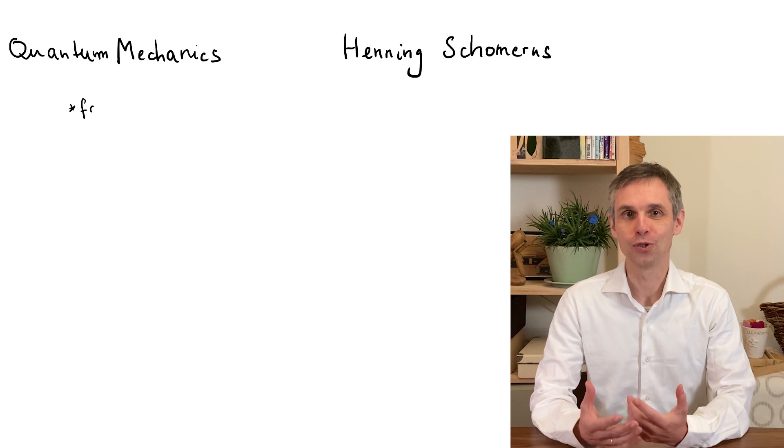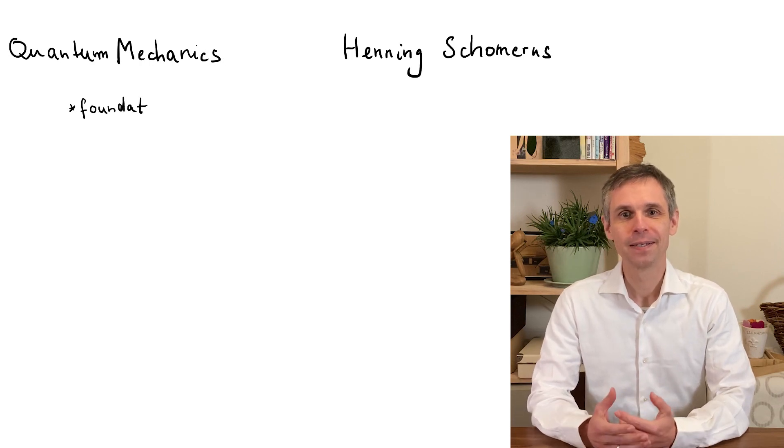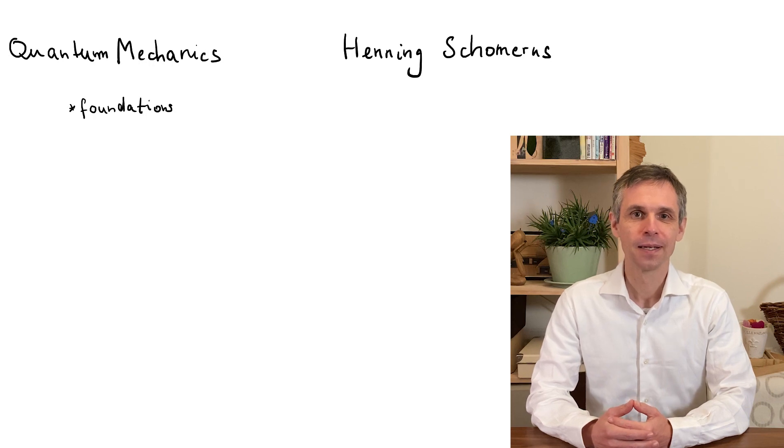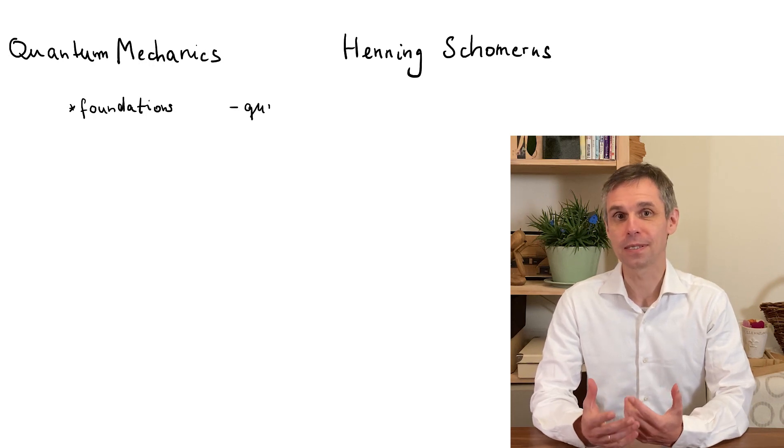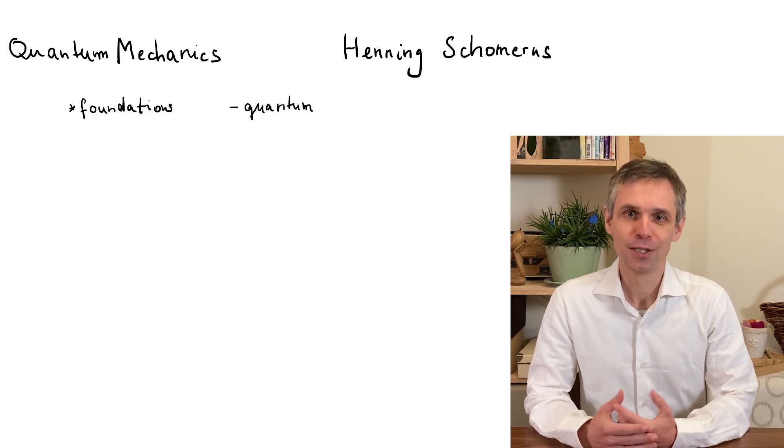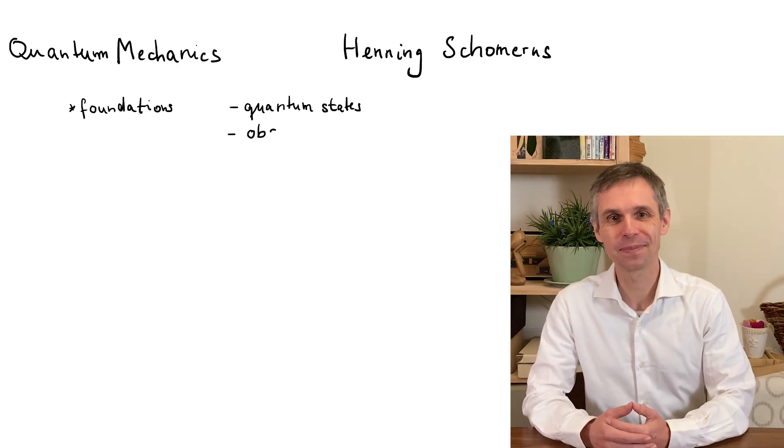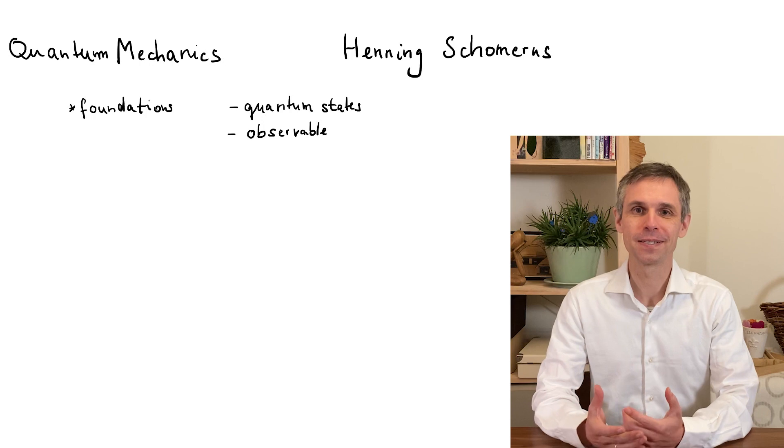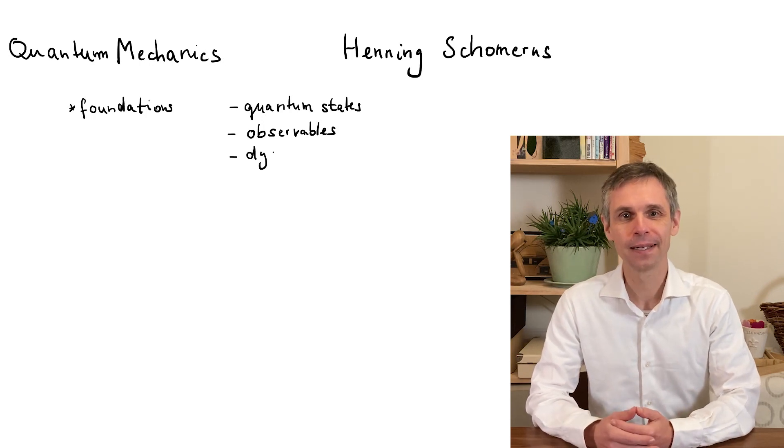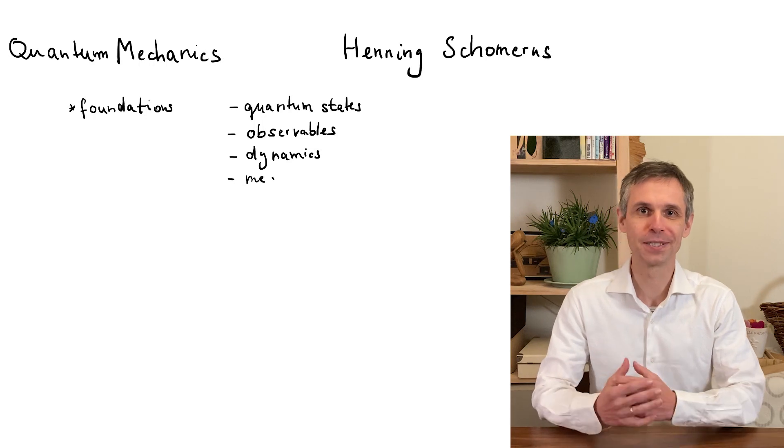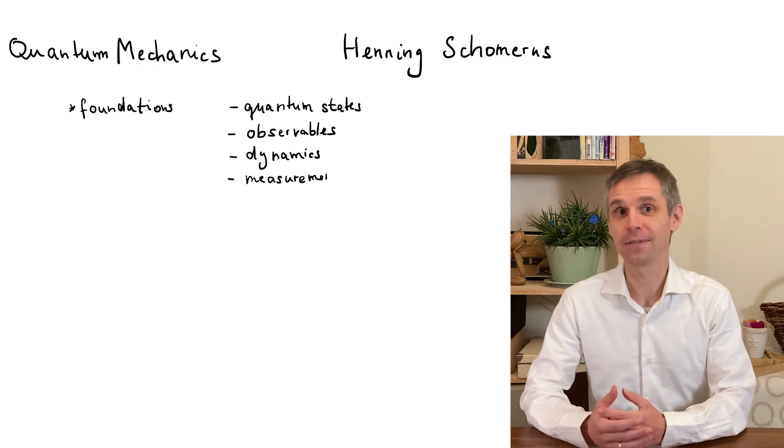The first one is to develop the foundations of quantum mechanics, along with a mathematical language in which it is formulated. Here we have to learn how to describe the states of a quantum system, introduce observables that define which questions we can ask about such systems, understand how quantum systems change over time, and finally see how we can extract information by doing a measurement and how a system is affected by this.